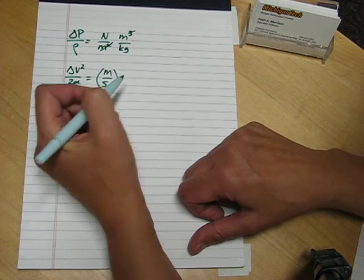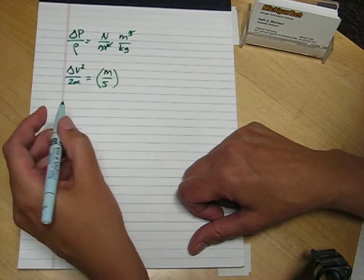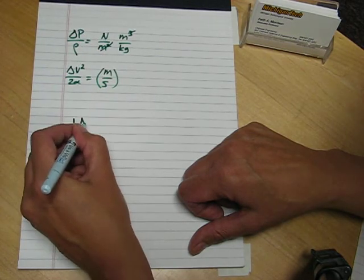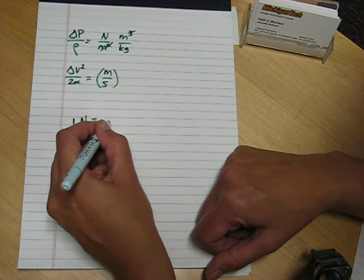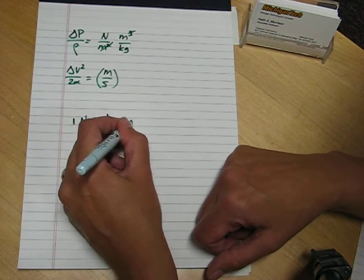To resolve this problem in SI units, we need the definition of a newton. One newton is one kilogram meter per second squared.